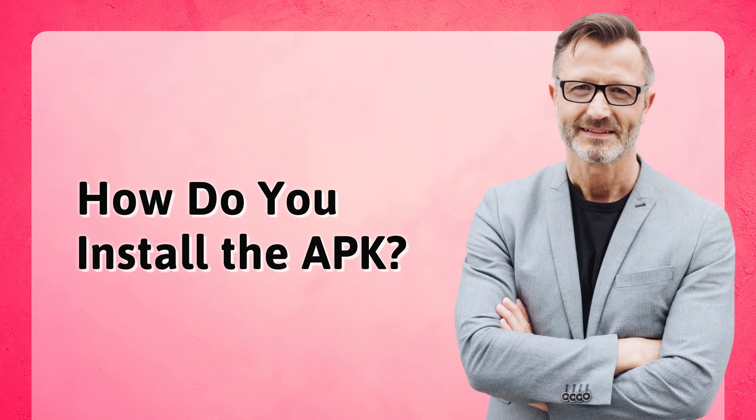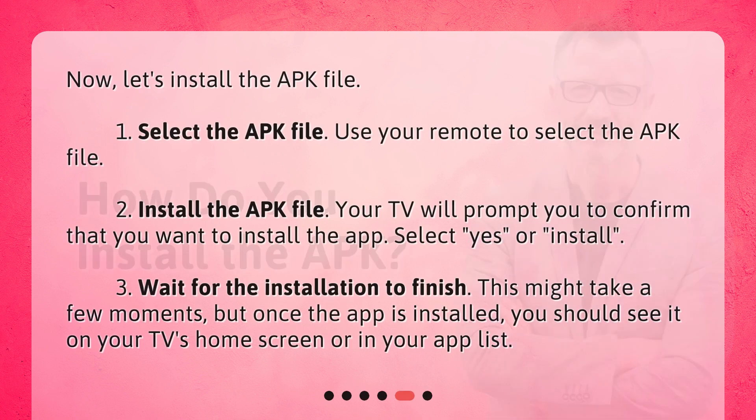How do you install the APK? Now, let's install the APK file. 1. Select the APK file using your remote. 2. Install the APK file — your TV will prompt you to confirm that you want to install the app; select 'Yes' or 'Install.' 3. Wait for the installation to finish. This might take a few moments, but once the app is installed, you should see it on your TV's home screen or in your app list.